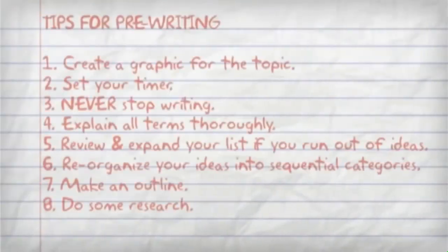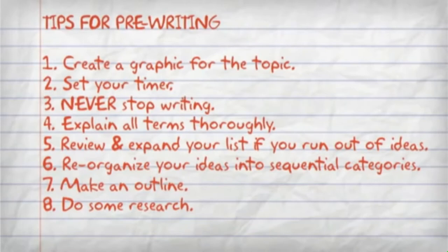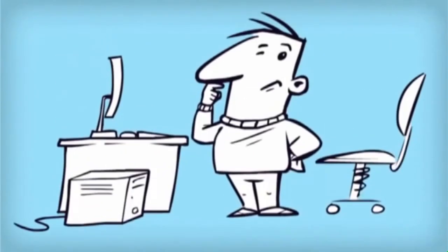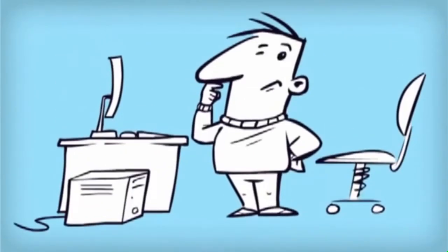After you have made your brainstorm list, you can separate ideas into categories or outline them to be developed into paragraphs later. You might also consider using one of the many graphic organizers available for recording pre-writing ideas. Get these preliminary ideas on paper and this will help you have a specific direction for your research.